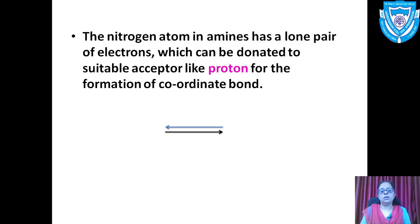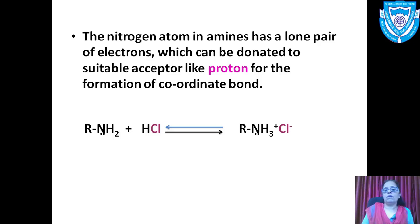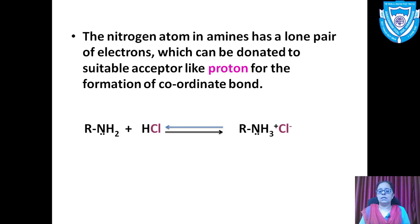A primary amine RNH₂, which is insoluble in water, reacts with concentrated mineral acid HCl. The nitrogen donates its lone pair to H⁺ and a coordinate bond is formed. The compound formed is a substituted ammonium salt, that is RNH₃⁺Cl⁻, which is called substituted ammonium chloride.